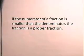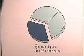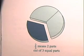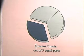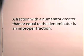Now we would like to define the types of fractions. If the numerator of a fraction is smaller than the denominator, the fraction is a proper fraction. An example of a proper fraction is two-thirds, which means two parts out of three equal parts. A fraction with a numerator greater than or equal to the denominator is an improper fraction.